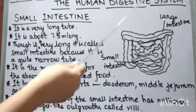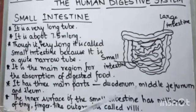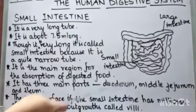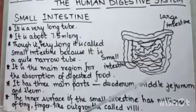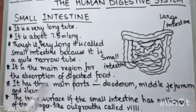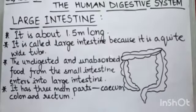The small intestine is the main region for the absorption of digested food — absorption of digested food takes place here. It has got three main parts: the duodenum, then the middle jejunum, and then the ileum. The inner surface of the small intestine has got millions of tiny finger-like outgrowths called villi.